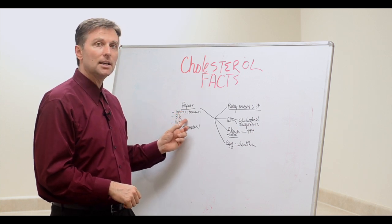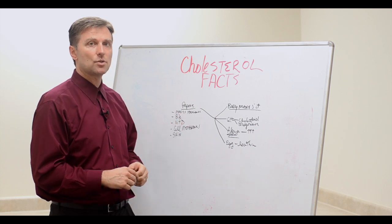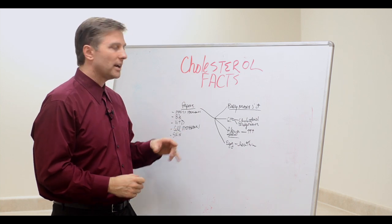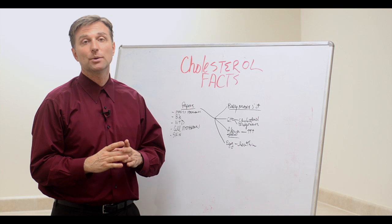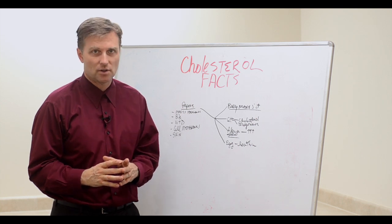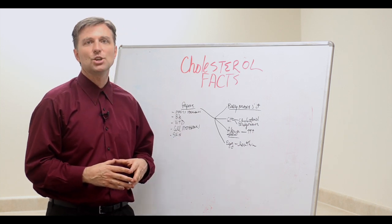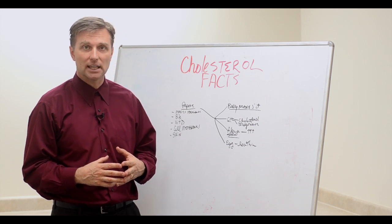And vitamin D. Vitamin D is made from cholesterol, from converting the sunlight through the skin. All the cell membranes are made from cholesterol. Your brain is made of cholesterol. The skin is lined with cholesterol. So you need cholesterol. It's not as bad as you think.